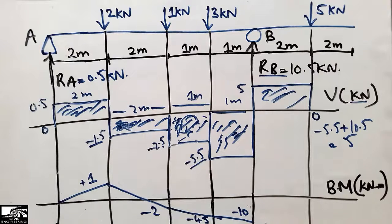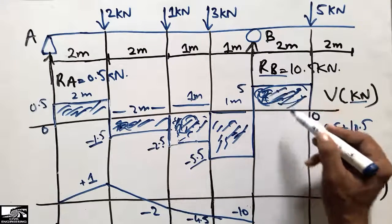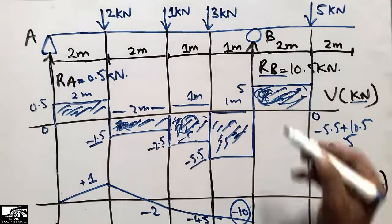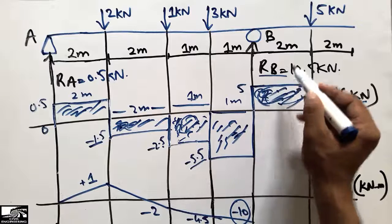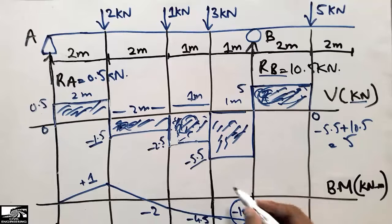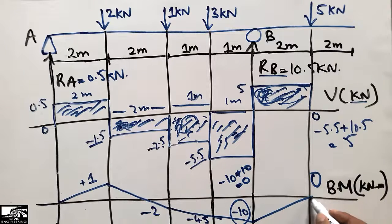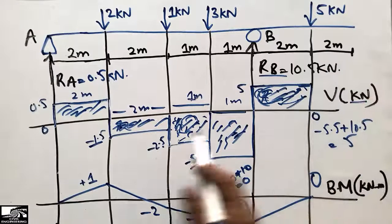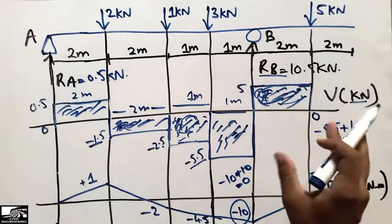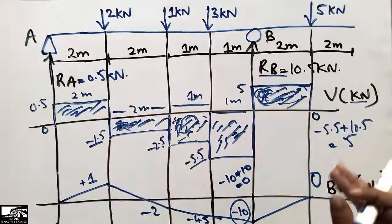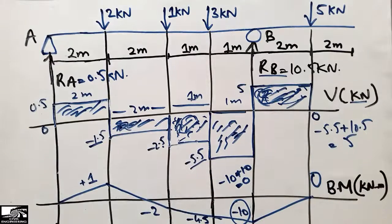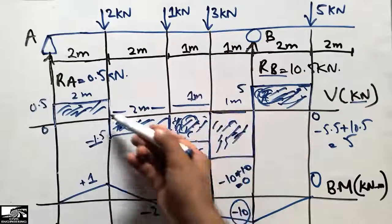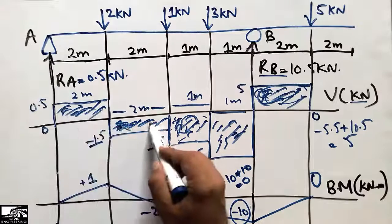The upward shear force rectangle has a depth of 5 and length 2 m: 5 × 2 = 10; adding to −10: −10 + 10 = 0. The bending moment diagram returns to zero at the right end. This is how we draw the shear force and bending moment diagrams for a beam with concentrated loads — first find support reactions, then construct SFD, then use the area method for BMD.